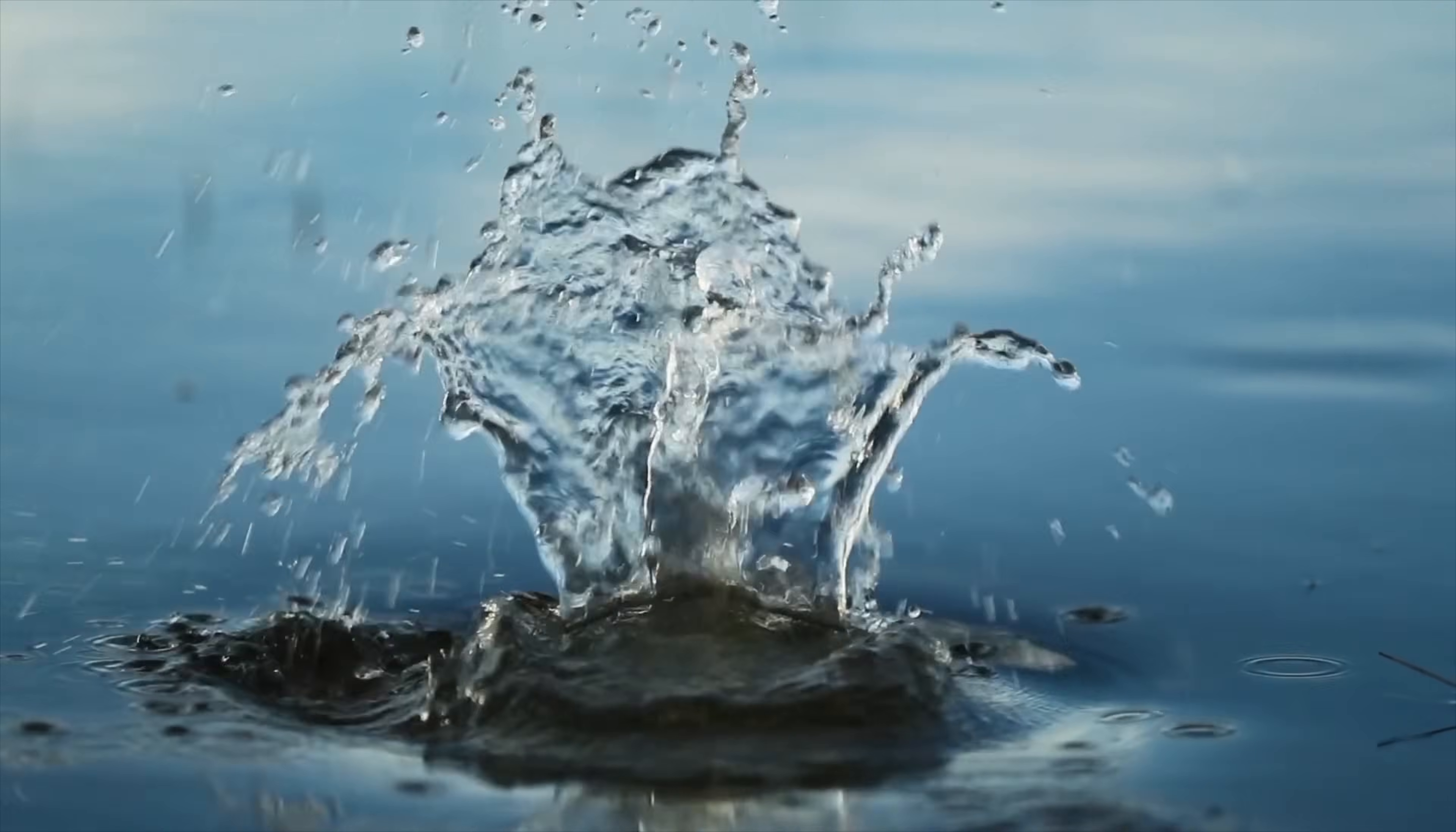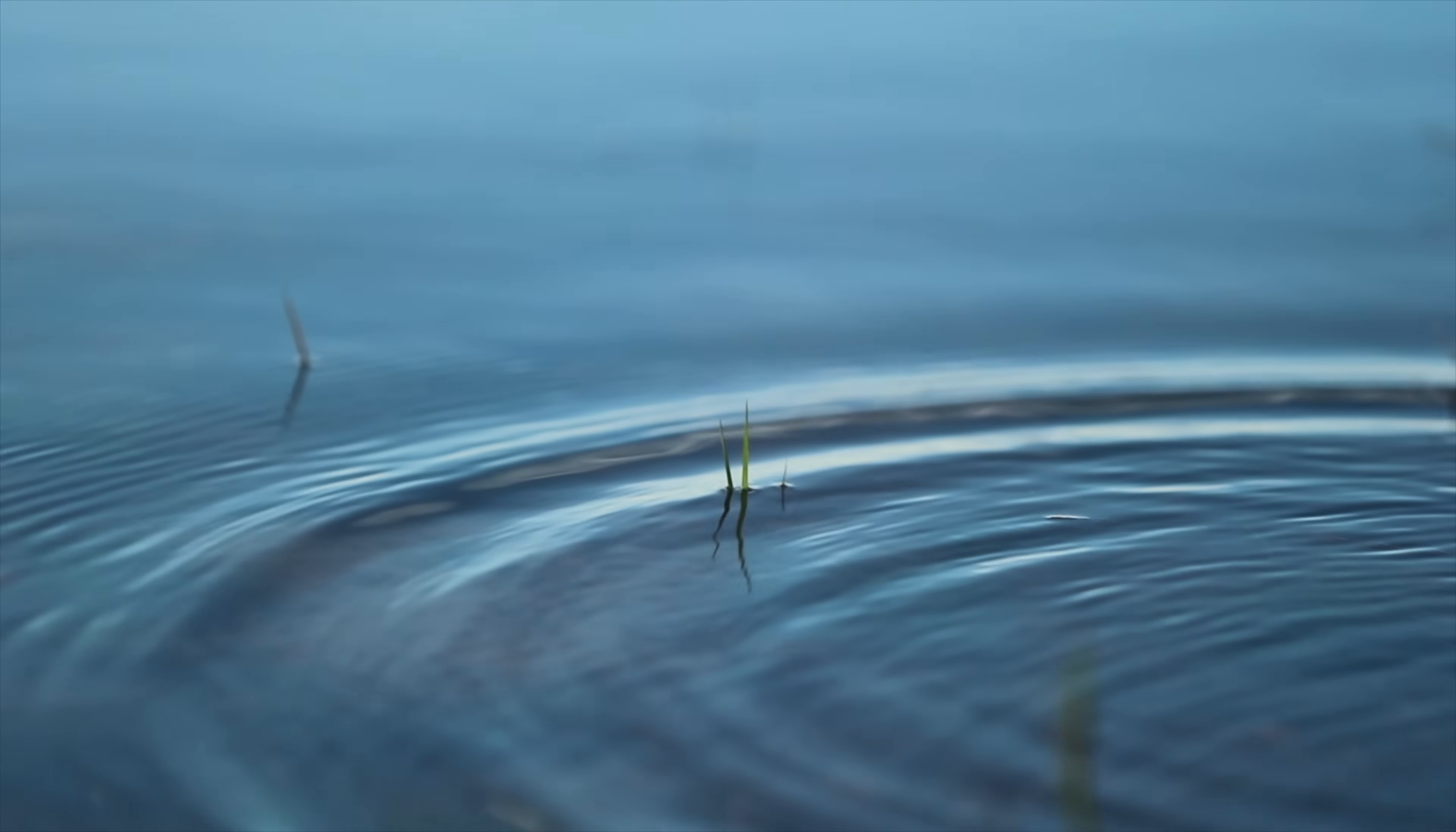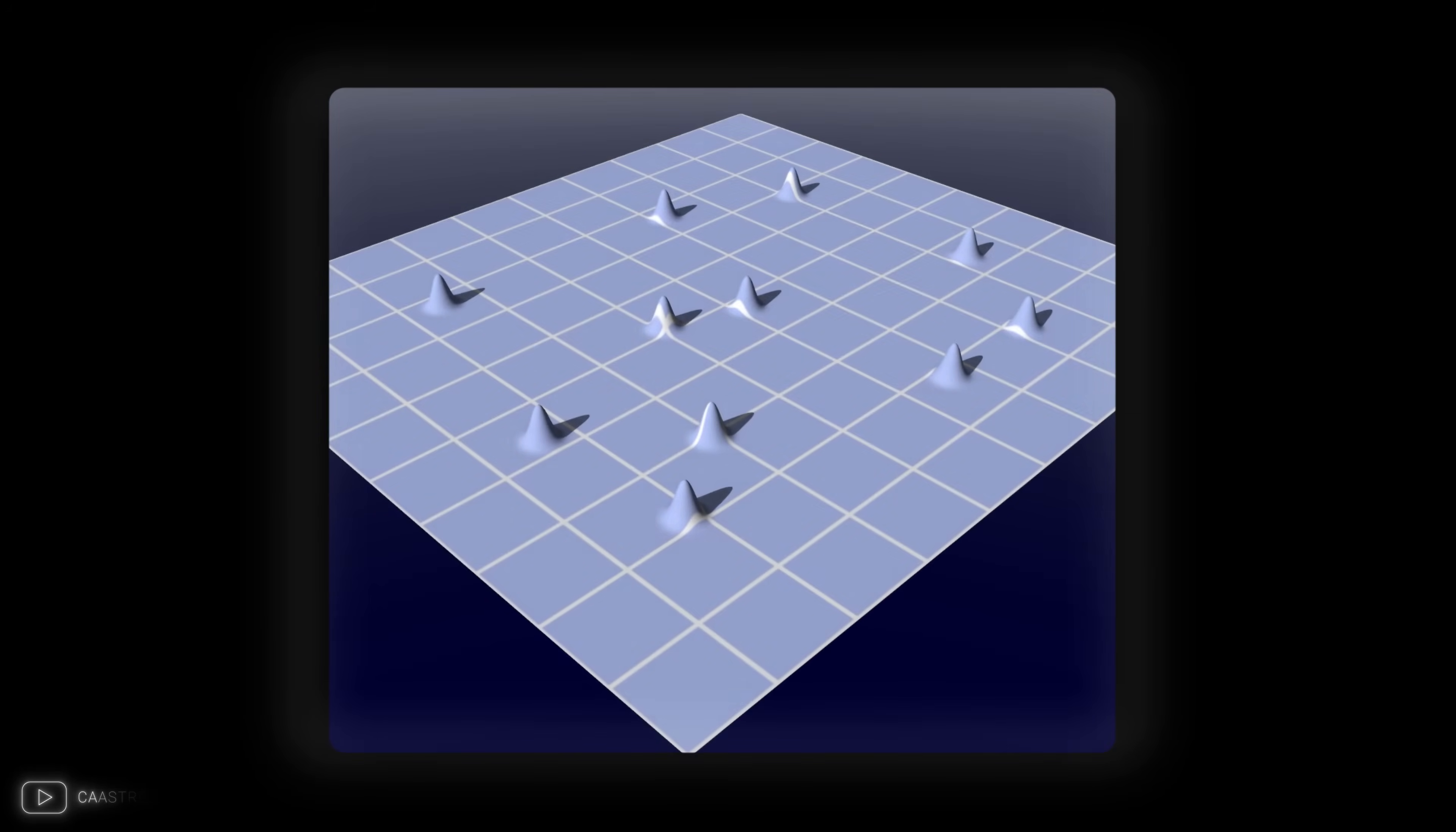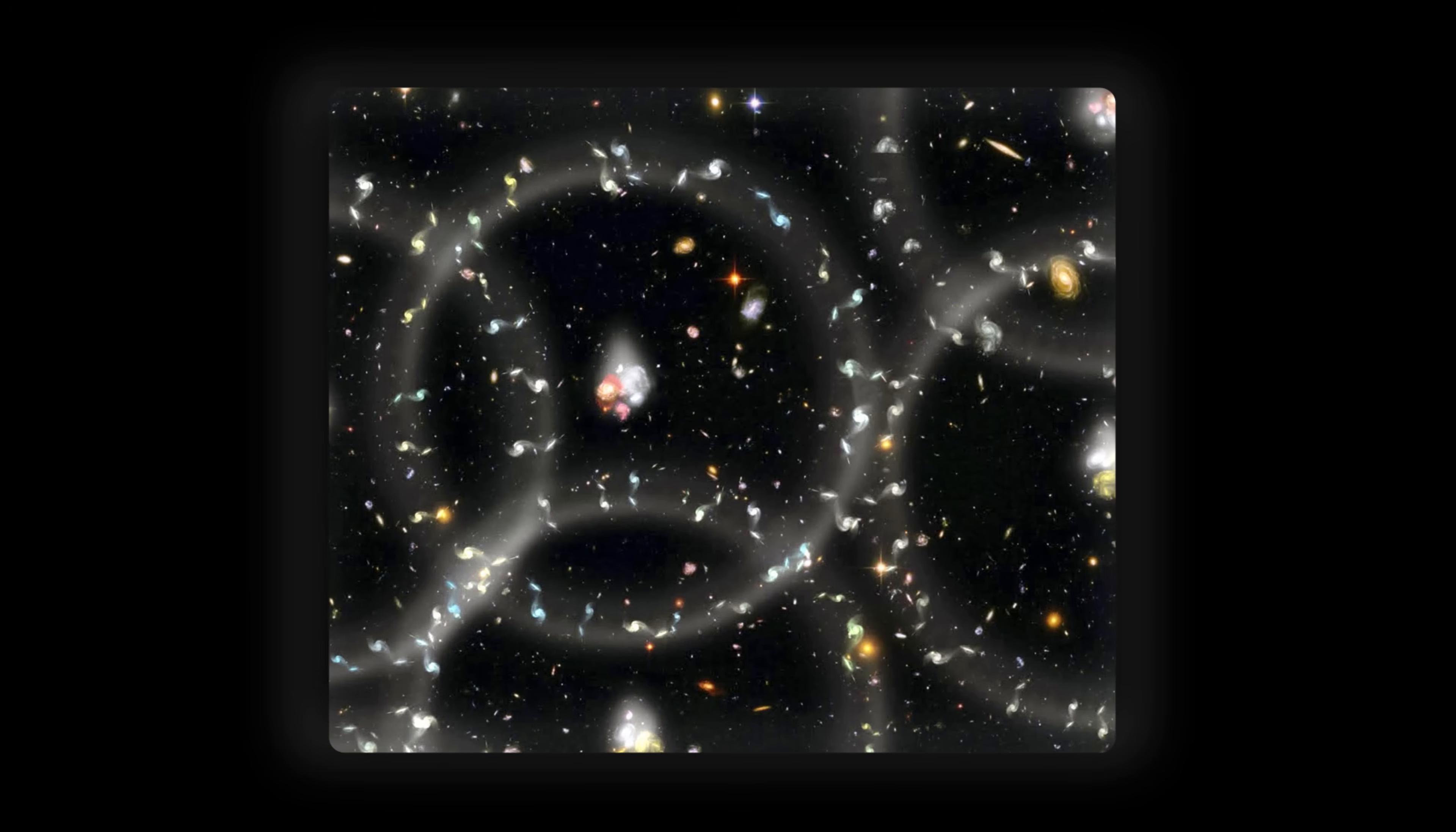Imagine a stone thrown into a quiet pond. The impact creates ripples that spread out in concentric circles. In the same way, BAOs spread through the early universe, creating ripples in the very fabric of space.